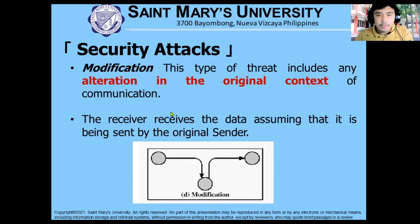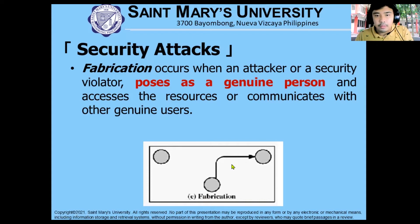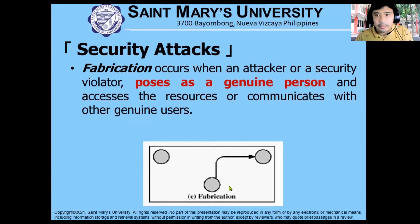Fabrication occurs when the attacker possesses as a genuine person and accesses resources or communicates with other genuine users. The concept under fabrication is identity theft — the attacker imitates the genuine person and then coordinates with a bank, using your identity to transact. So the attacker uses your identity to perform transactions on your behalf. That's the concept under fabrication.